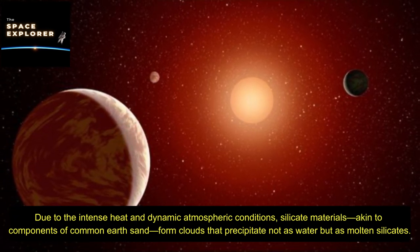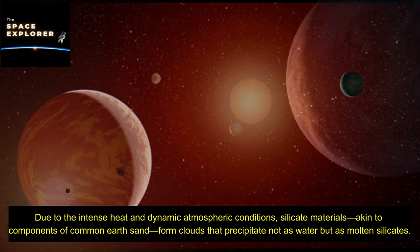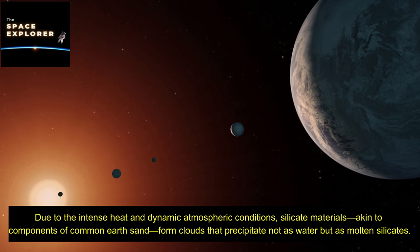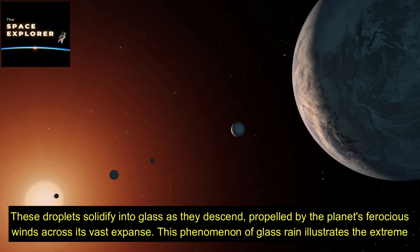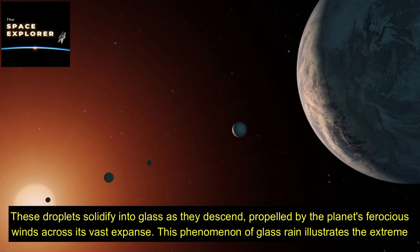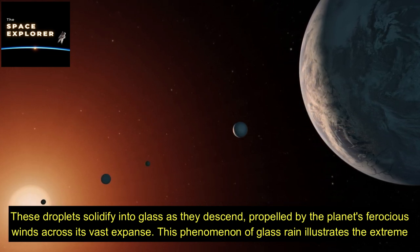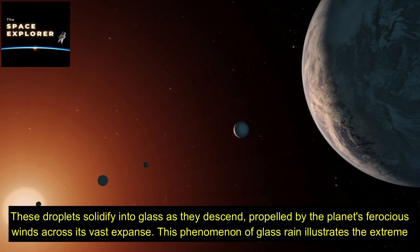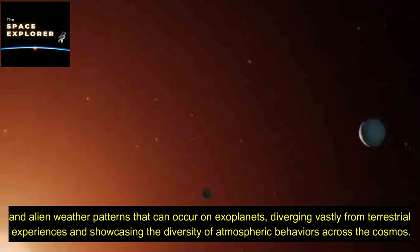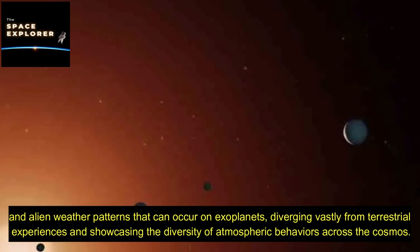Due to the intense heat and dynamic atmospheric conditions, silicate materials, akin to components of common Earth sand, form clouds that precipitate not as water, but as molten silicates. These droplets solidify into glass as they descend, propelled by the planet's ferocious winds across its vast expanse. This phenomenon of glass rain illustrates the extreme and alien weather patterns that can occur on exoplanets, diverging vastly from terrestrial experiences and showcasing the diversity of atmospheric behaviors across the cosmos.